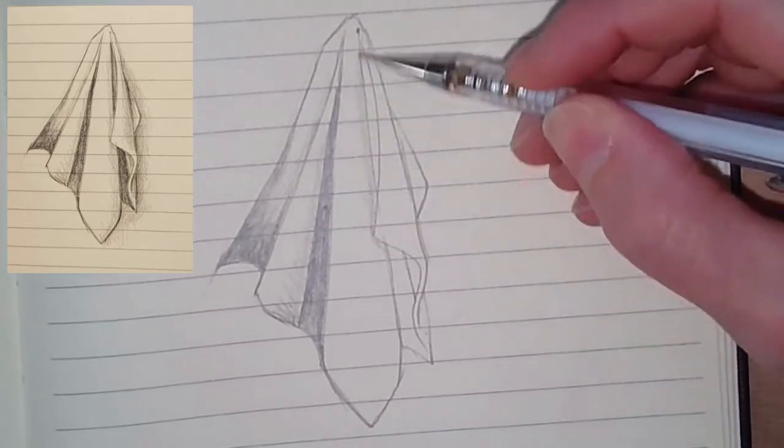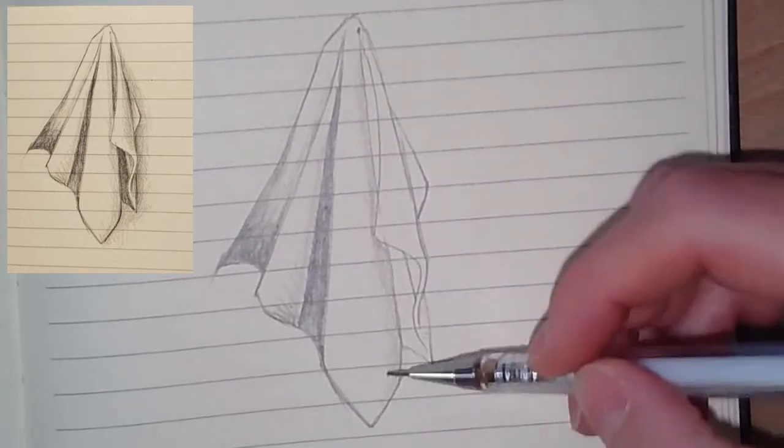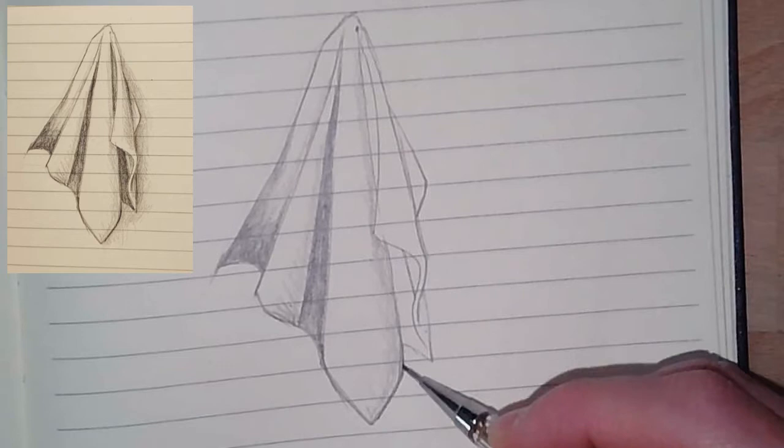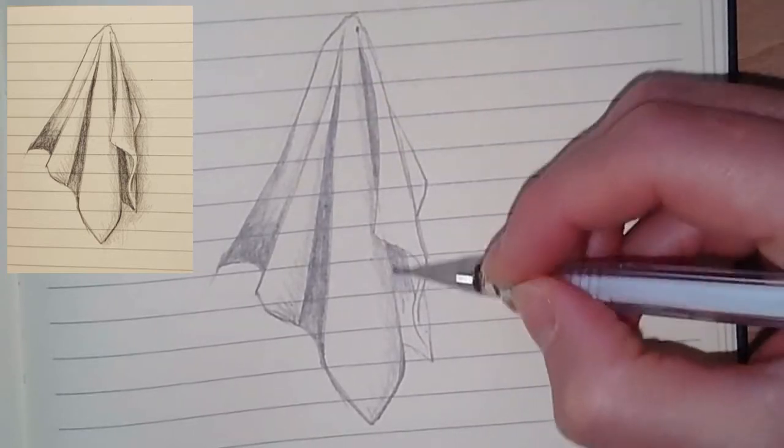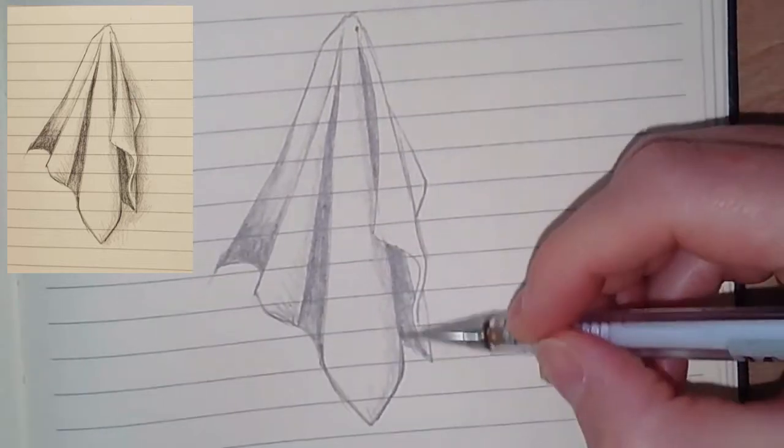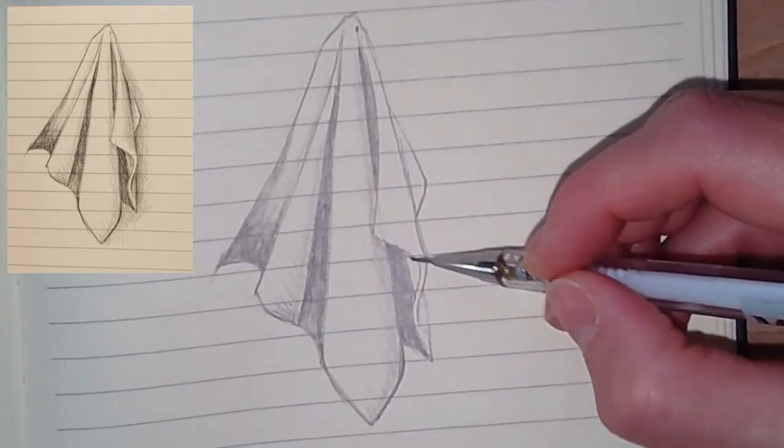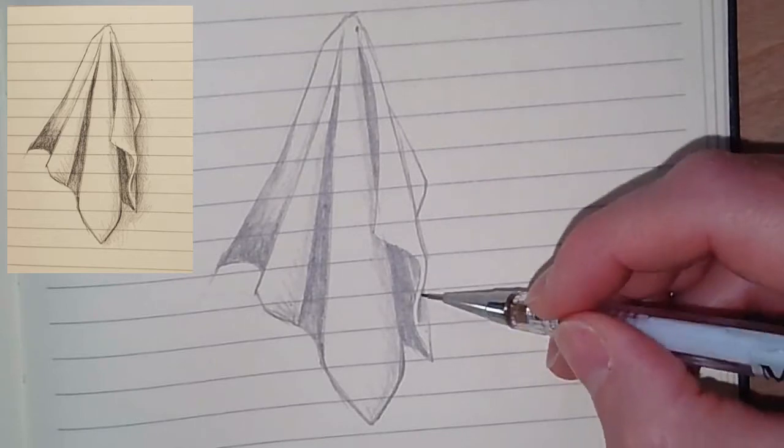We're going to keep it nice and dark, and then I use the point seven for the lighter values. I worked left to right because I'm right-handed and I don't want to smudge my graphite at all.